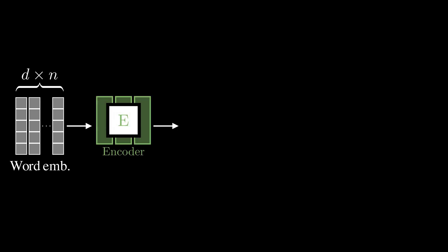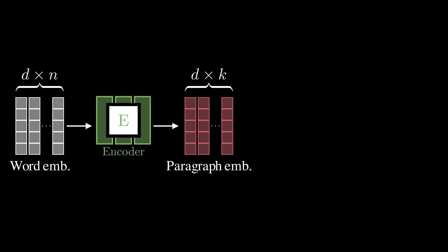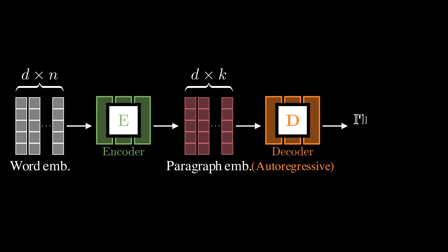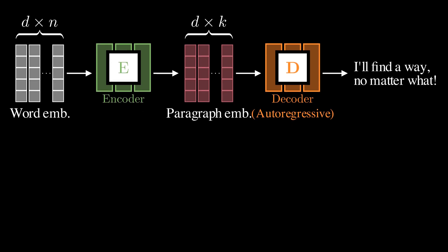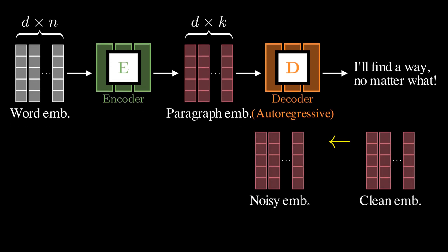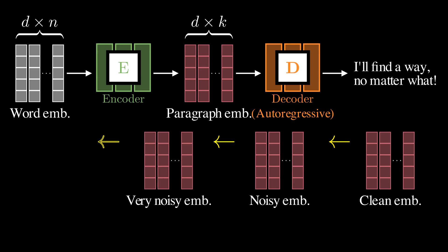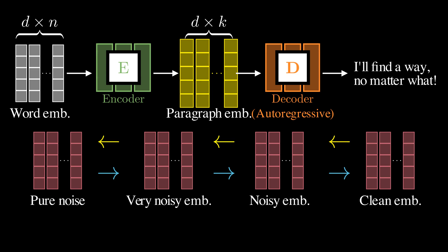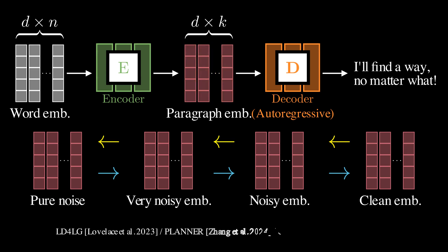One way to address this problem is to encode entire sentences or paragraphs into continuous latent representations. Here, D is the dimension of the word embedding, and N is the number of tokens. The role of the encoder is to compress the word embeddings into fixed-size latent representations. We can transform paragraph embeddings back into text using an autoregressive decoder. Now we can apply this diffusion process in this latent space. Latent diffusion models enable us to use richer semantic units, enhancing the coherence of generated text. Once we have the denoised paragraph embeddings, we can decode them back to text.